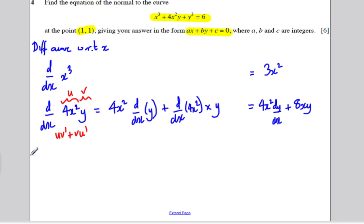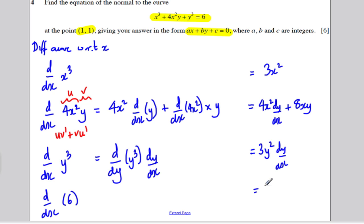And lastly, I'm going to differentiate with respect to x, y cubed. And how I do that is I differentiate implicitly. I differentiate this with respect to y because I can do that. And I post-multiply by dy/dx to correct. The differential with respect to y of y cubed is 3y squared. So I get 3y squared dy/dx. And lastly, for completeness, the differential of a number 6 is going to be 0.